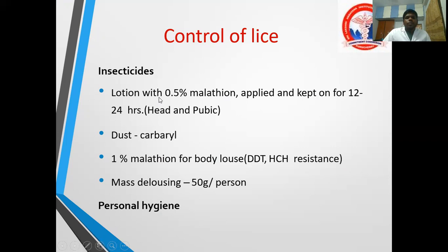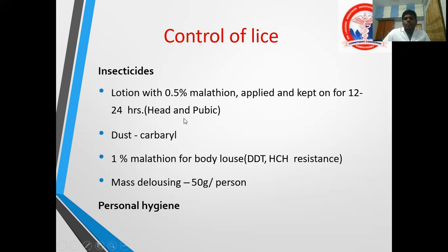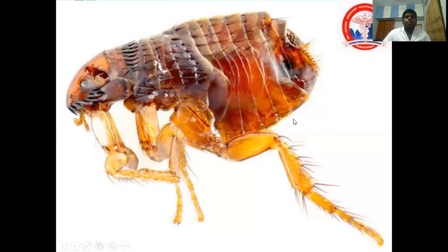For control: apply 0.5% Malathion lotion, kept for 12 to 24 hours — this is for both head and pubic lice. For body louse, use 1% Malathion dust or carbaryl dust. Previously DDT was used, but resistance has developed to both DDT and lindane. For mass delousing, use carbaryl dust at 50 grams per person. Personal hygiene is important: bathe properly, dry clothes in sunlight, and do not share combs, clothes, or towels.